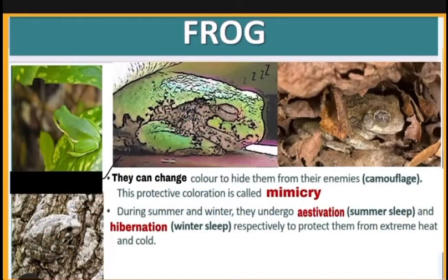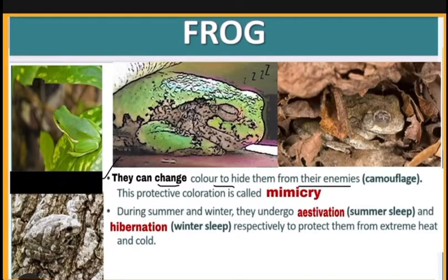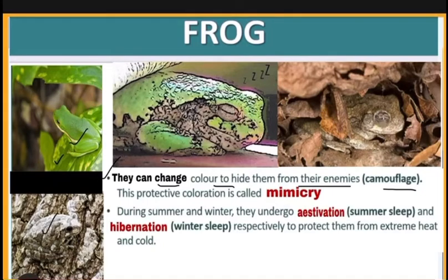Frogs can change color to hide from their enemies — this is called camouflage. For example, this frog is green in color because it is sitting in a green environment, and this frog is gray or brown in color because it is sitting on rocks.